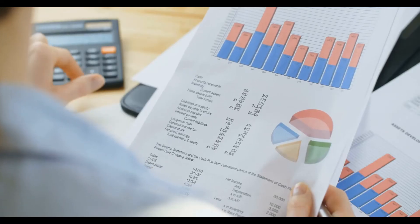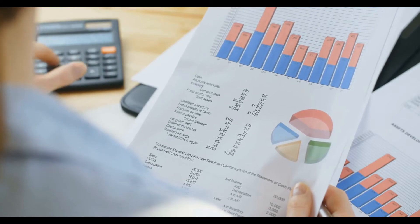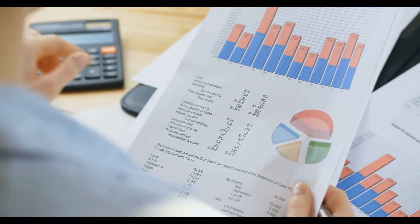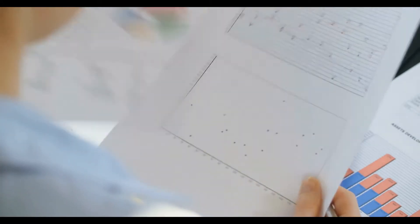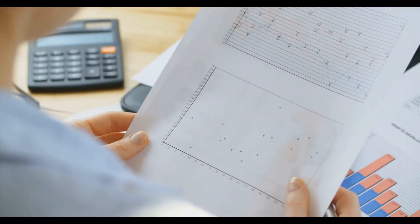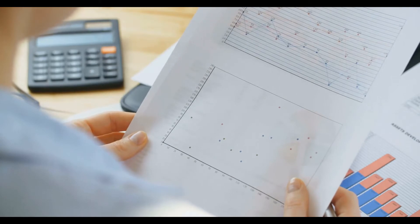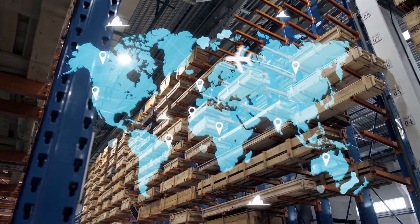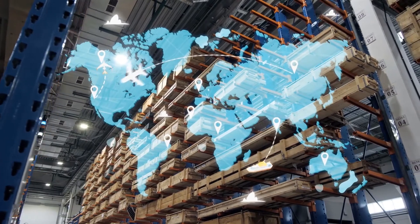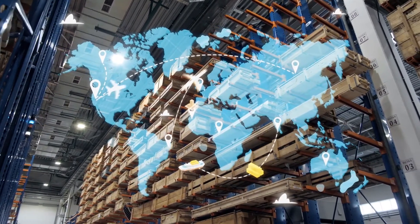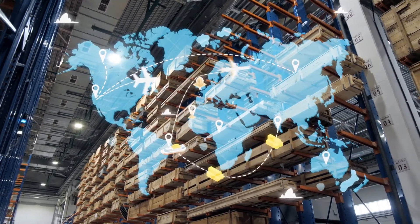A capital or financial lease functions according to the regulations put in place in the jurisdiction where the agreement is established. Different nations set the criteria for what constitutes a lease of this type. In the United States, a capital lease must meet one of four basic qualifications.